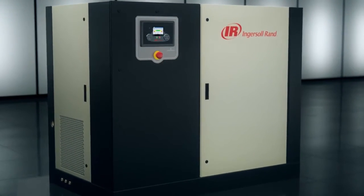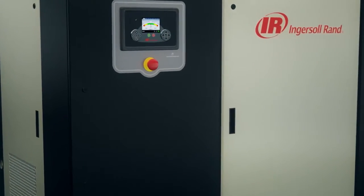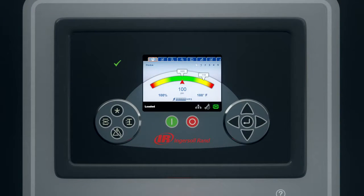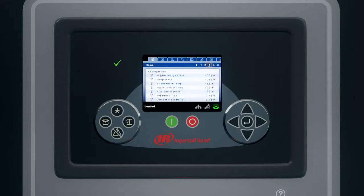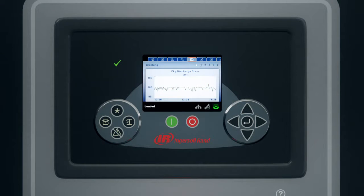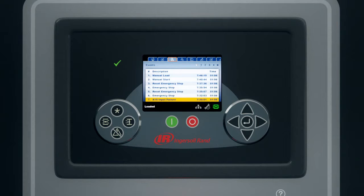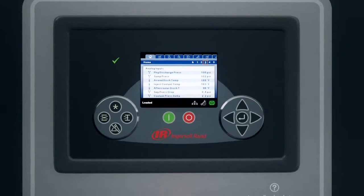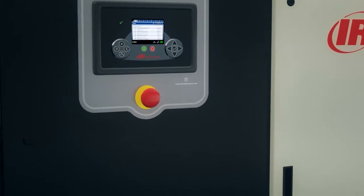The next generation R-series compressors come equipped with the advanced XE-series controller, a state-of-the-art controller complete with an intuitive, high-resolution, large-color display that provides actionable information in over 30 languages. Many XE-series controllers are available with a real-time clock that can schedule start and stop times, allowing for proactive maintenance planning.